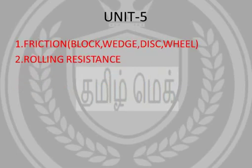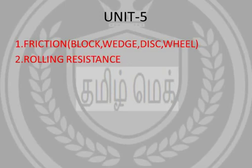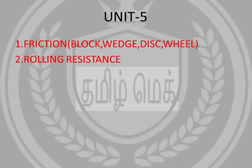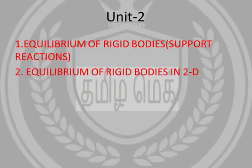Unit 5 has a lot of changes. You can see the topic of friction, which is the basic topic of this unit. The next topic is rolling resistance. The syllabus also includes screw jacks, ropes, wedges, and blocks. Rolling resistance is an important topic in this unit.